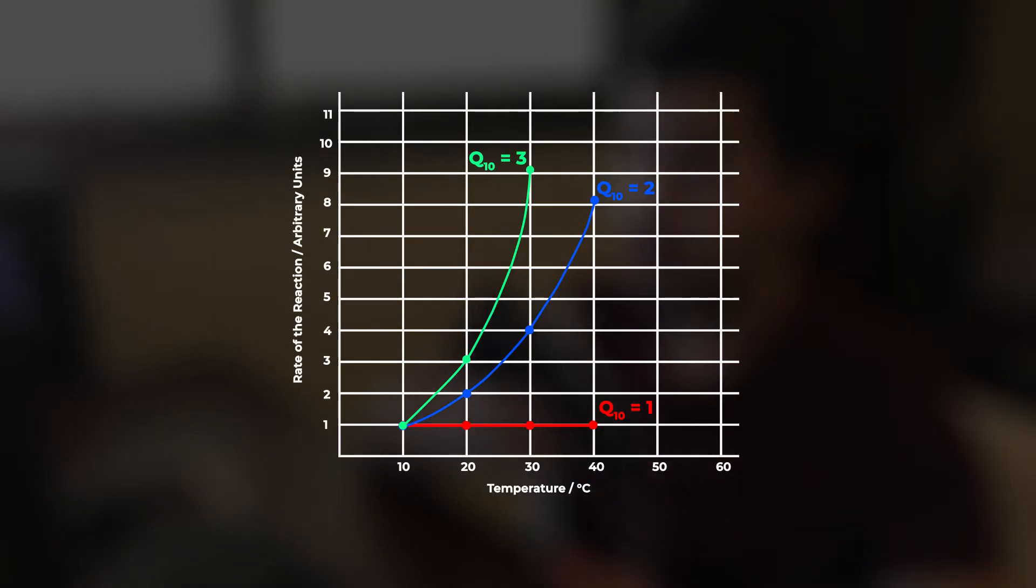A Q10 of three tells us that the rate of reaction will triple for every increase in temperature by 10 degrees Celsius.